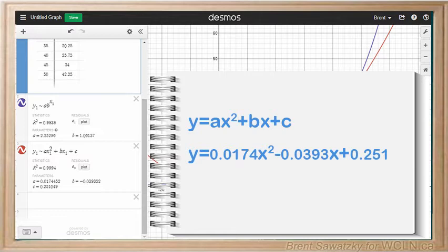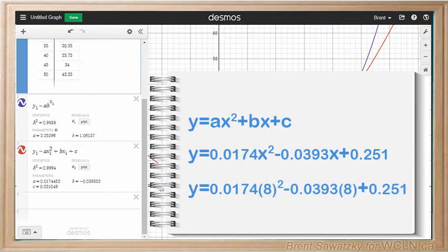If we were asked to predict the car's position after eight hundredths of a second we'd have a few choices. We could plug in x equals 8 into our equation and solve for y. No problem there.